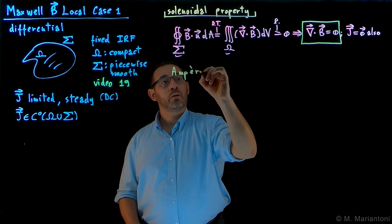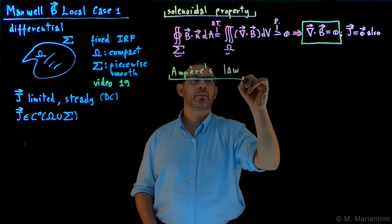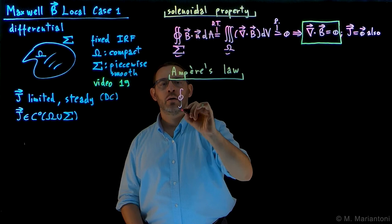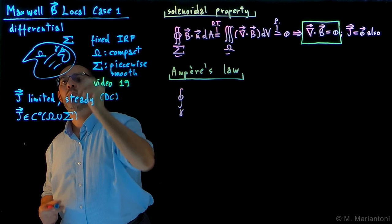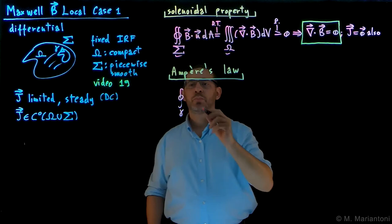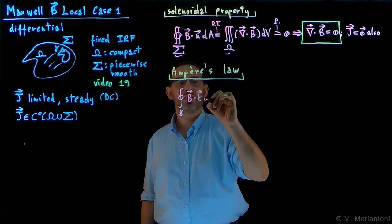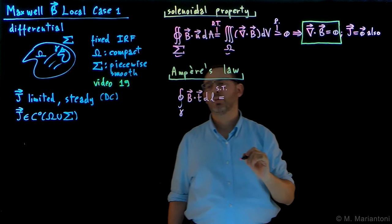What about the other law, which is Ampere's law? In this case, we know that the circulation along any closed line gamma contained within this region—note that there were a few questions in video 19, so we are doing, of course, the circulation on closed lines gamma within capital Omega. So in this case, the circulation of B dot dL, first of all, math before doing physics, we use the Stokes theorem in this case.